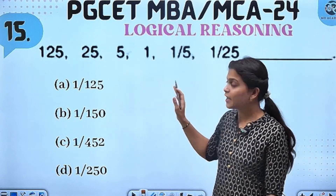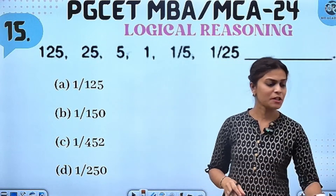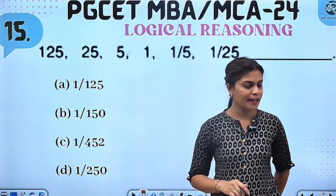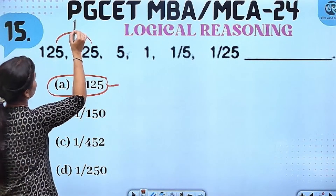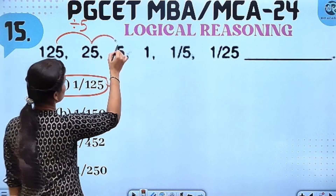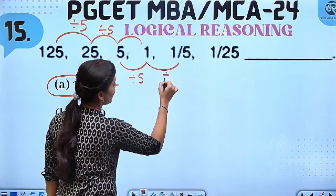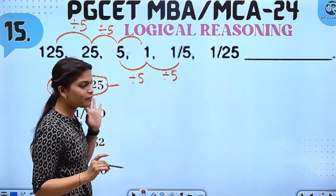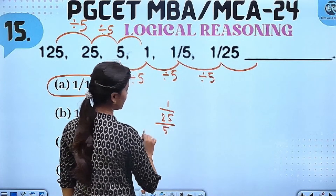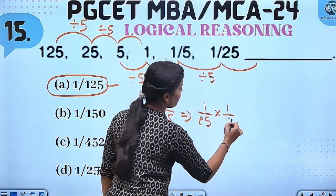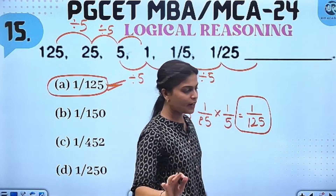Yes. So, 1, 25 — N is the answer. Okay? Option A. Yes, of course. 1 divided by 25 divided by 5 — so 1 by 25 into 1 by 5 — so 1 by 125. So your answer is option A — 1/125.